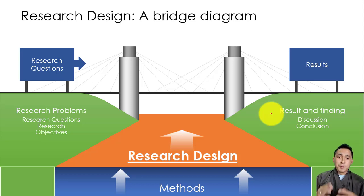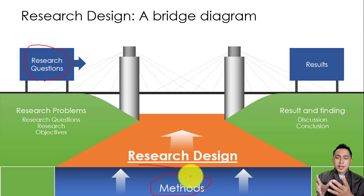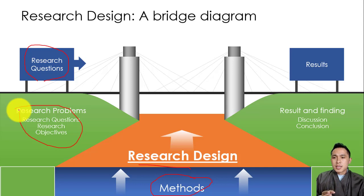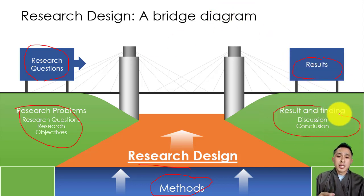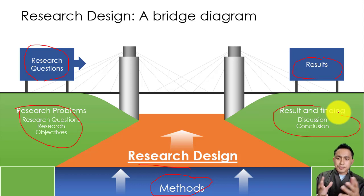Research design is basically a collection of methods, collection of data collection instruments, collection of sampling strategies, and also the collection of data analysis tools and statistical procedures. Research design or methods is basically a link between the research question or research problem on one hand, and the results or conclusions on the other. So there's a big gap left between the research question and the results, and that gap is filled by what is called the methods or the research design.